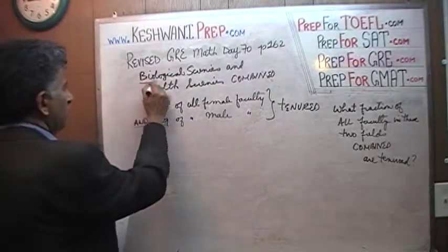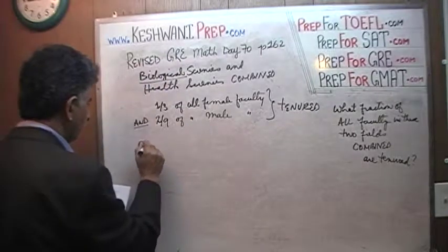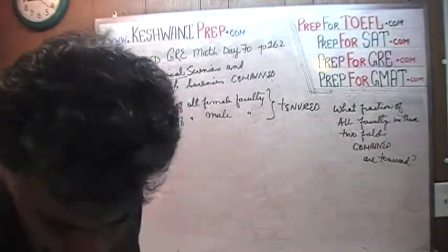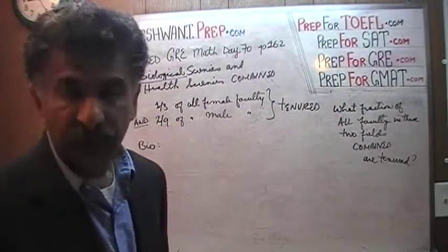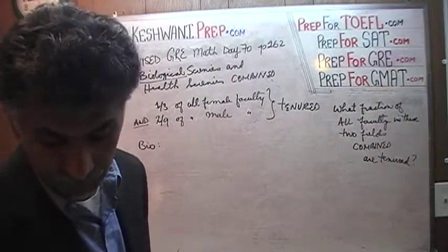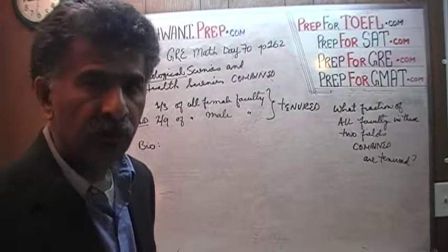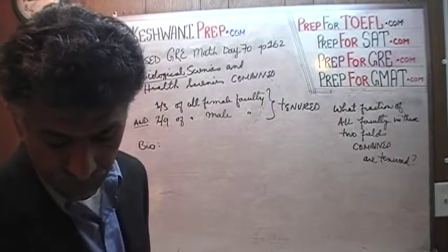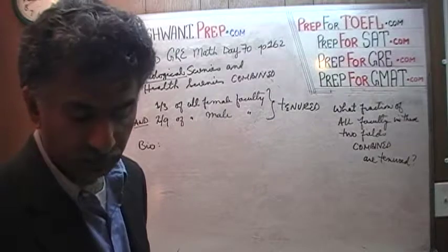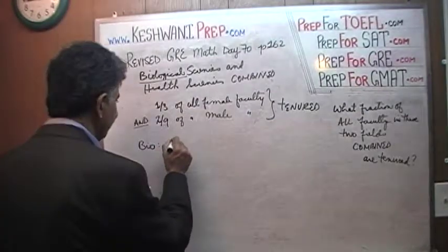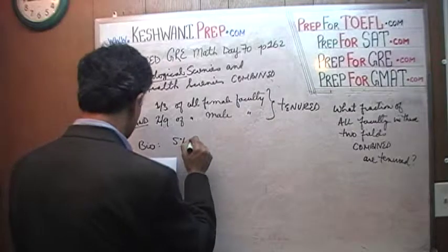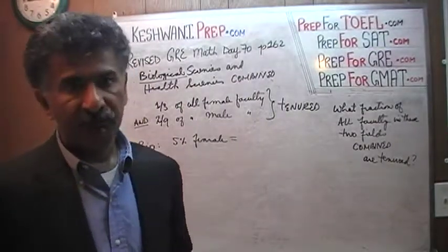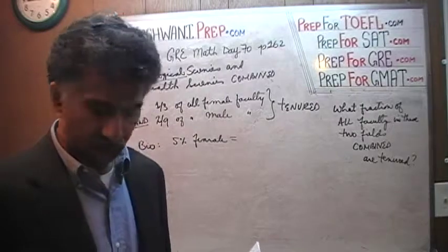Let's start with the biological sciences. If you read the chart, look at the biological sciences and find out what percentage of the faculty members are female. The chart shows you what percentage of all female faculty of the college is engaged in biological sciences. You will see from the chart that 5% of all female faculty members are working in the biological sciences. If they had 100 female faculty in the college, 5 of them are in biological sciences.